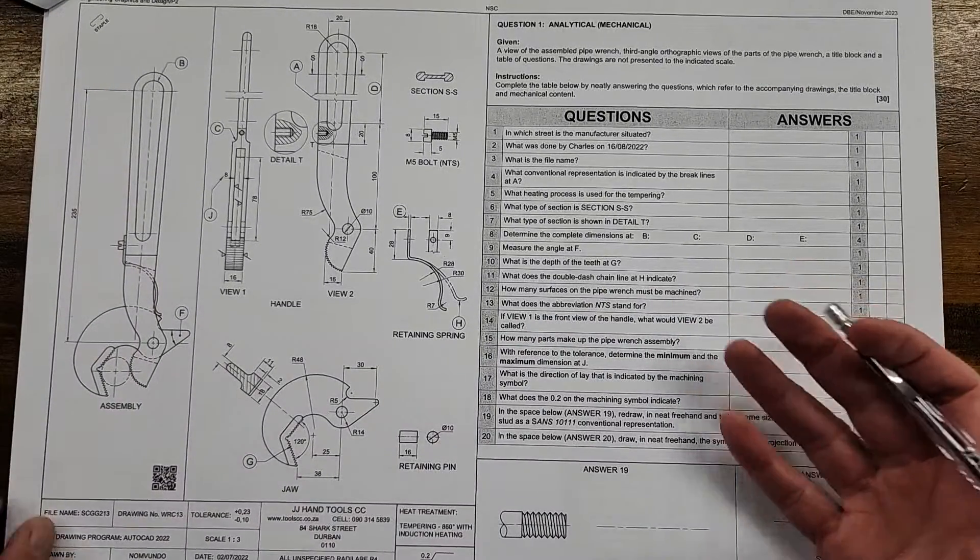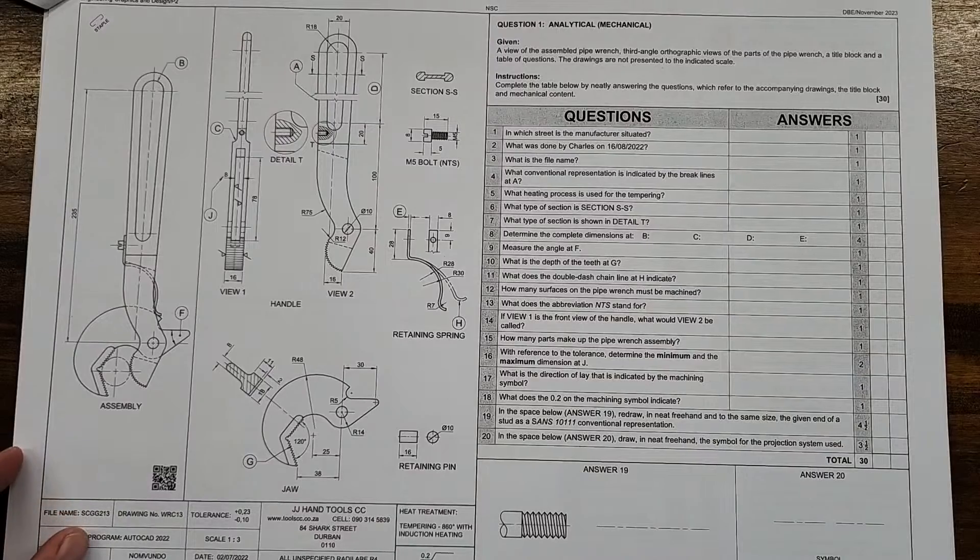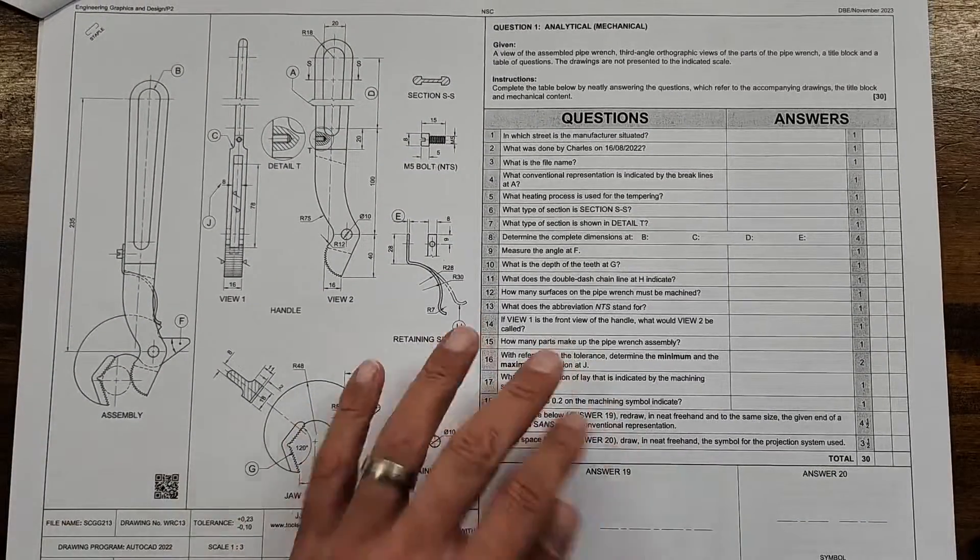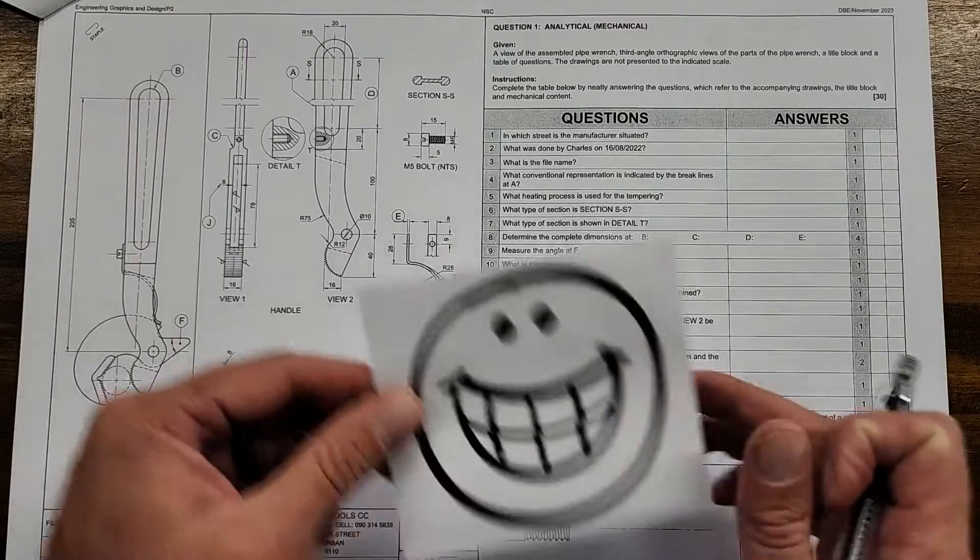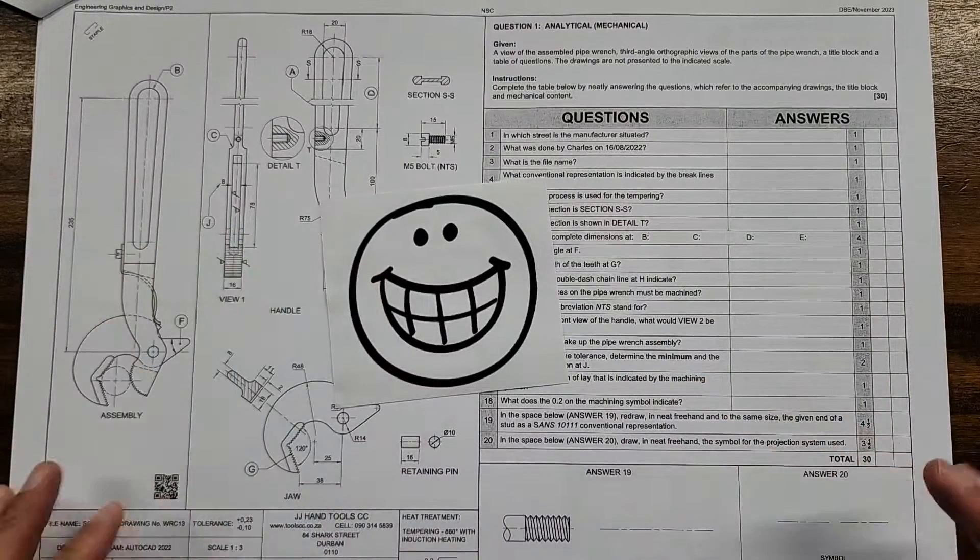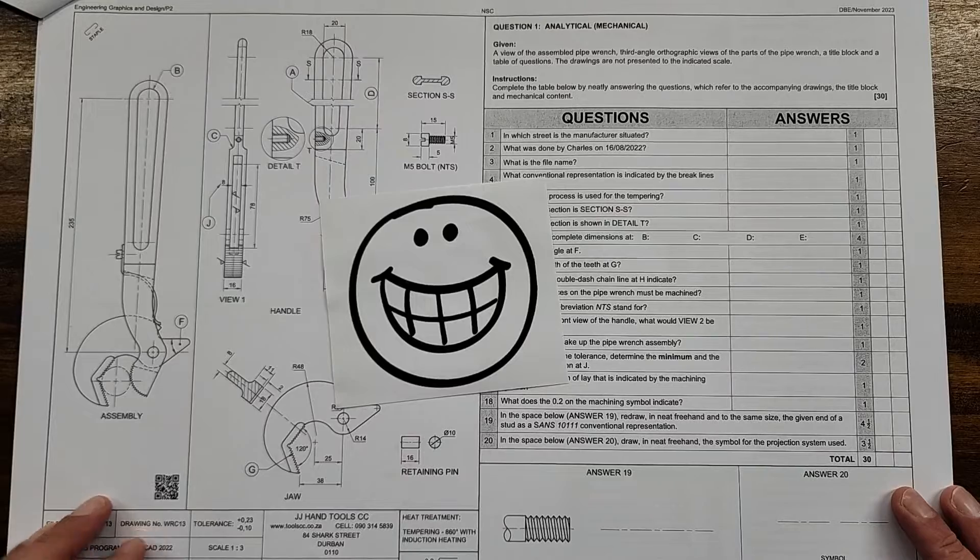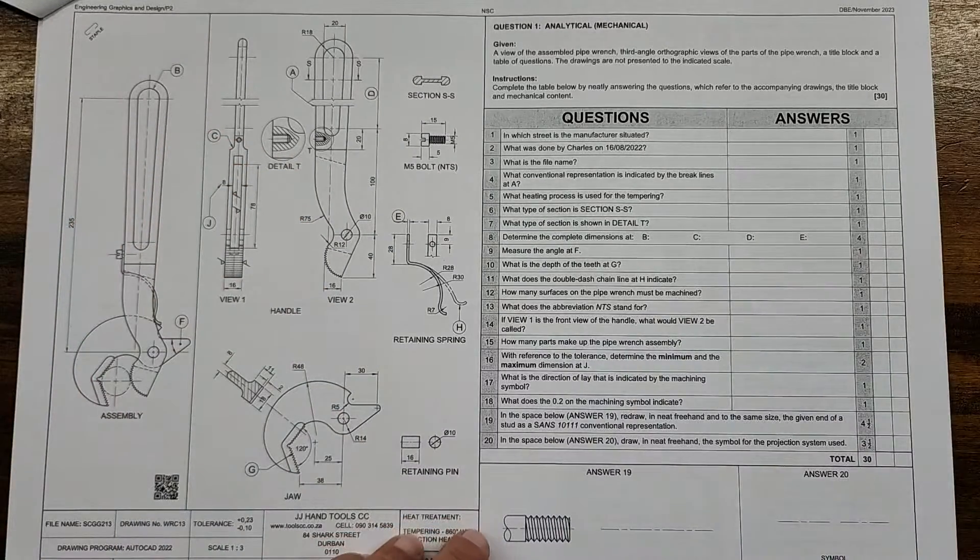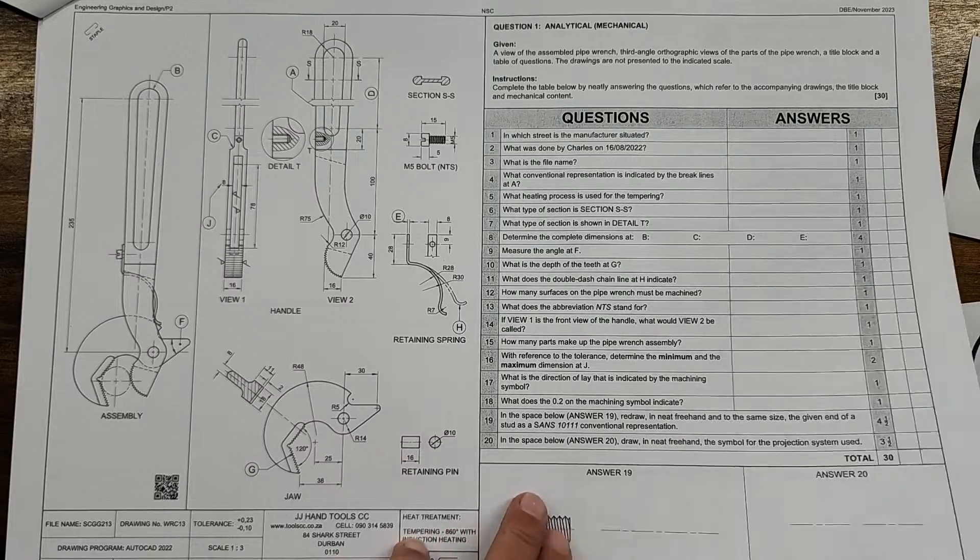The big giveaway on this question that actually gave all of you three and a half marks is this last question. In the space below, draw a neat freehand symbol for the projection system used. This paper is the third angle of the graphic projection. And if you were unsure, all you had to do was page to the mechanical assembly and you would have taken that symbol and just redrawn it here freehand. And you've got your three and a half marks as easy as that. A lot of the other questions here, they asked the abbreviation for NTS. That's not to scale, of course. Reference to tolerance. We expected that. Measurements, you're going to get that. So I think this very first question, it's the first one that you would have all seen with your eyes. And you had reading time added to it. You probably, if you've prepared well, you have to be happy getting this question. There's not anybody that can say anything that was asked in this question was you're not prepared for. That's a fact.